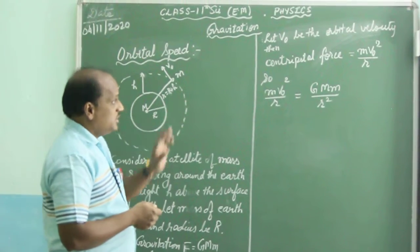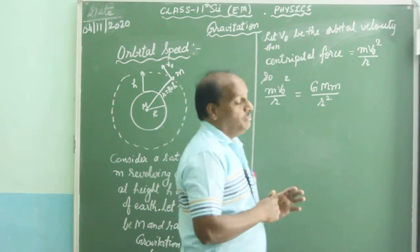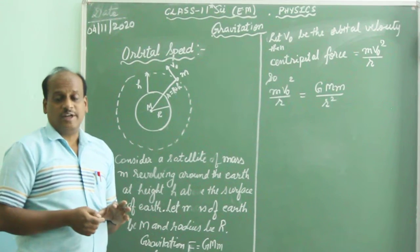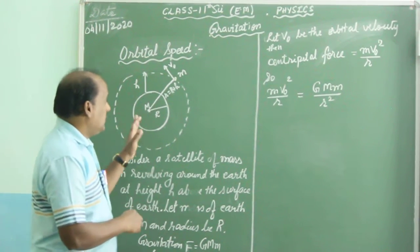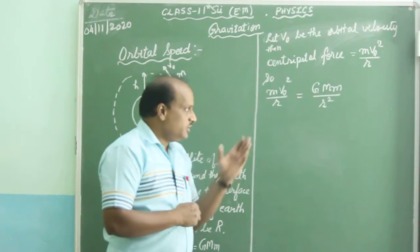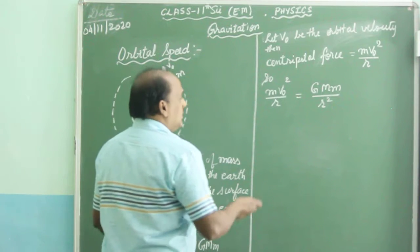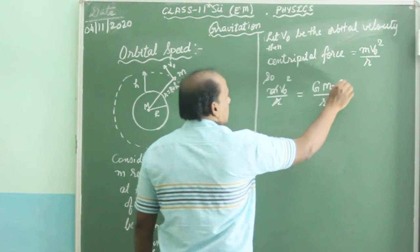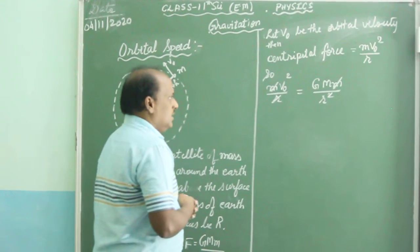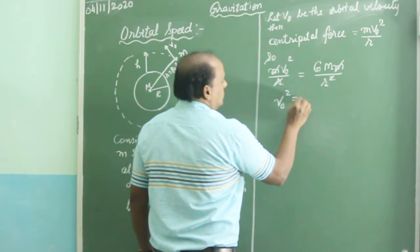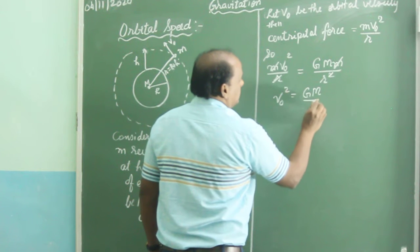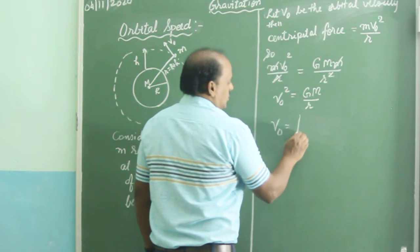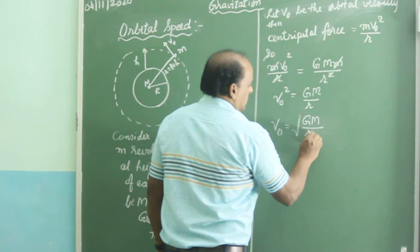The centripetal force required by the satellite to maintain its circular orbit is provided by the gravitational force acting between the Earth and the satellite. When equating these two equations, r and r get cancelled, and m and m also get cancelled. So we get V0 squared equals GM divided by r, that is V0 equals the square root of GM over r.